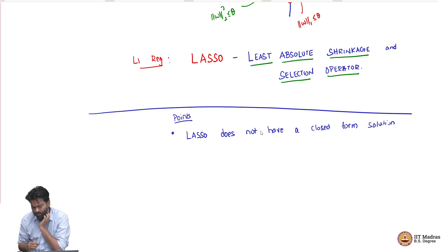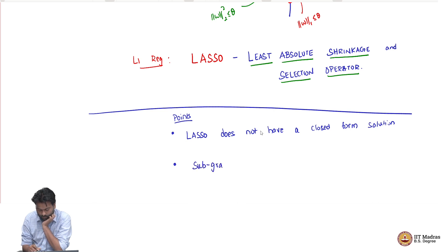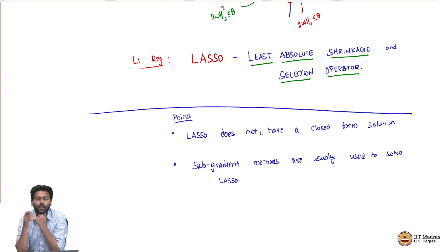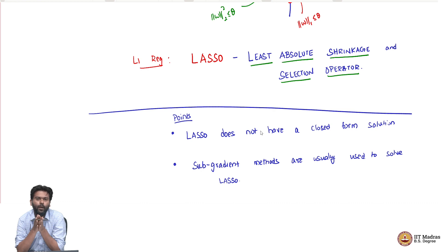So how do we solve this problem? You can use what are called sub-gradient methods, which are usually used to solve lasso. Remember, gradient methods were just following the negative gradient direction. Now for problems where differentiation is an issue — where you cannot take the gradient at all points — you can still solve the problem using an iterative method if instead of the gradient, something called a sub-gradient exists.